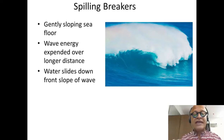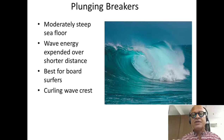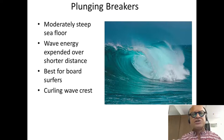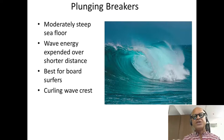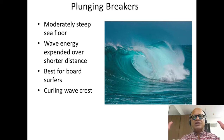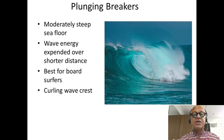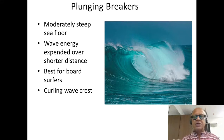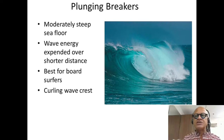In a plunging breaker — what you see in exciting movies with Hawaiian surfers — the slope is steeper than in a spilling breaker. Wave energy is spent in a shorter distance as you come towards the coast. It's best for professional board surfers. You get these curling wave crests, so-called tubes, and you often see surfers flying out of the tube along the waveform.